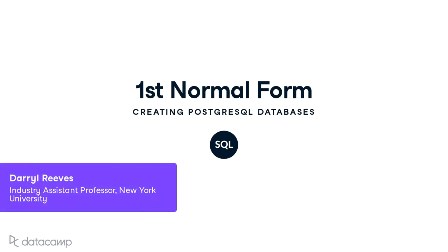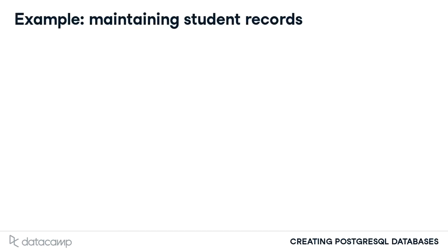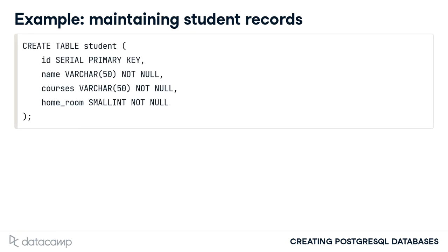To begin our database normalization journey, we'll begin by introducing the first step of the process, requiring each table to be in first normal form. Throughout the remainder of this chapter, a running example will be used. Imagine that a high school wants to maintain student records in a database. A first design of this database results in the creation of a student table. This table includes a primary key, a student name, courses, and a homeroom column.